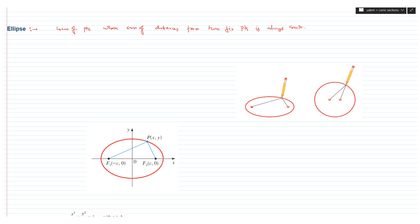Look at the diagram below. We can draw the ellipse using a simple tool — a thread of constant length tied at two ends. If you put a pencil here, the length of the thread is always constant. This confirms that the distance of this point from each end, when added together, is constant. That is, the sum of distances L1 and L2 is constant, and the movement of this point creates an ellipse.